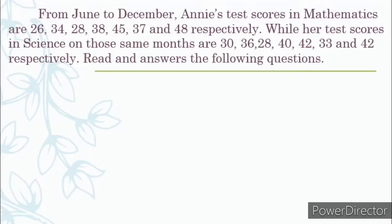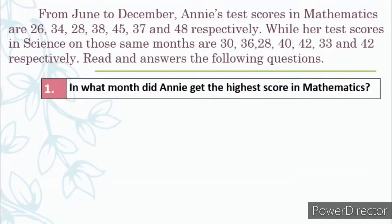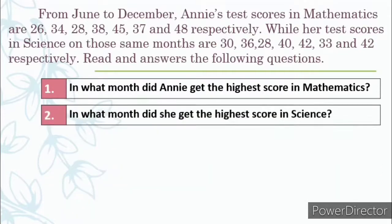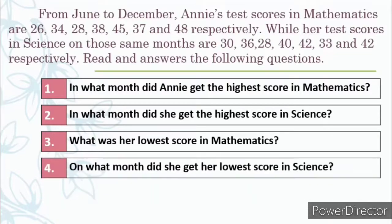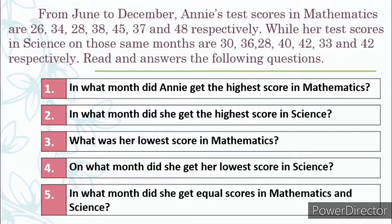Read and answer the following questions. Number 1: In what month did Annie get the highest score in mathematics? Number 2: In what month did she get the highest score in science? Number 3: What was her lowest score in mathematics? Number 4: On what month did she get her lowest score in science? And number 5: In what month did she get equal scores in mathematics and science? How did you obtain your answers? Were you able to answer the questions without difficulty? Later on, we will answer these questions in an easier way.